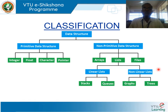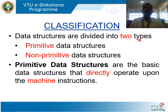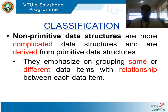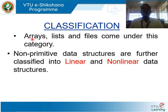Non-linear data structures are non-sequential organizations; examples are trees and graphs. Primitive data structures directly operate upon machine instructions and have different representations on different computers — integers, floating point numbers, character constants, string constants, and pointers fall under this category. Non-primitive data structures are more complex and derived from primitive ones, emphasizing grouping of same or different data items with relationships between them. Arrays, lists, and files fall under this category.